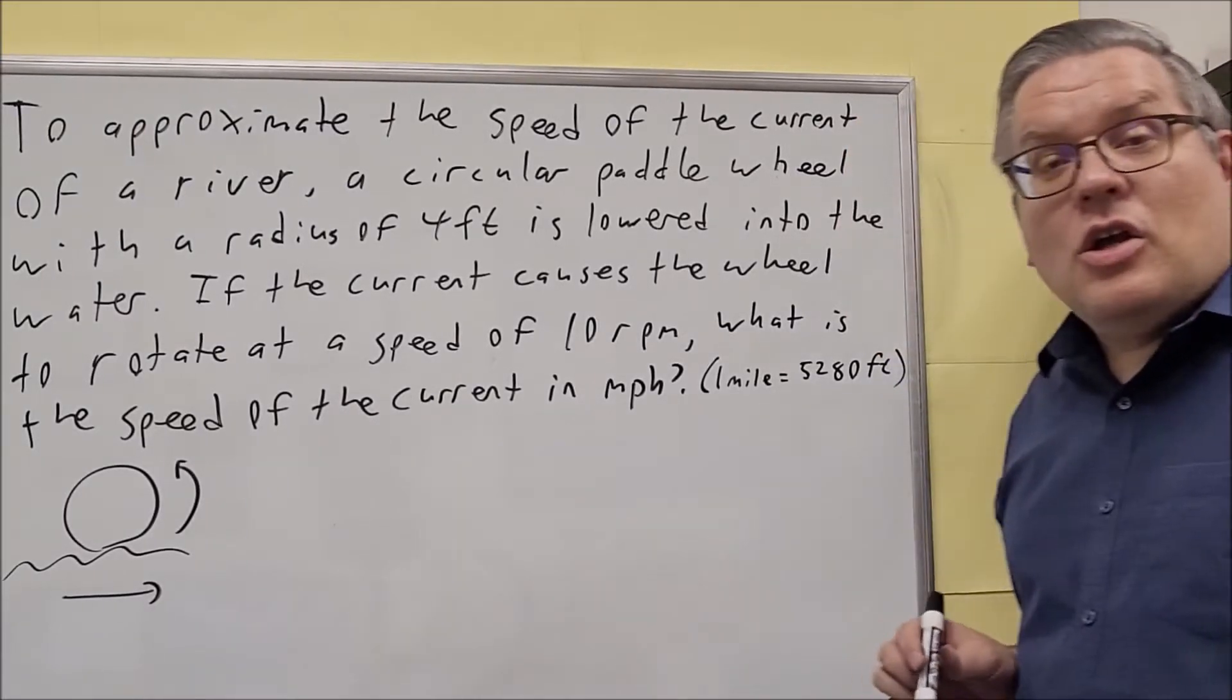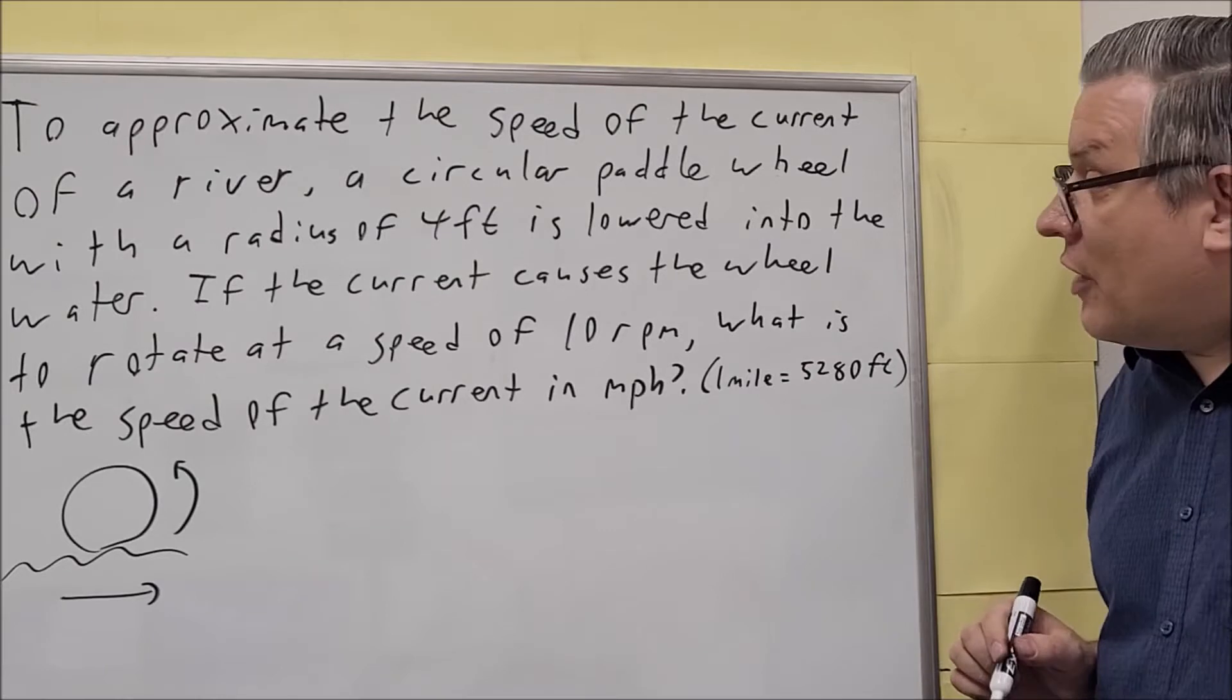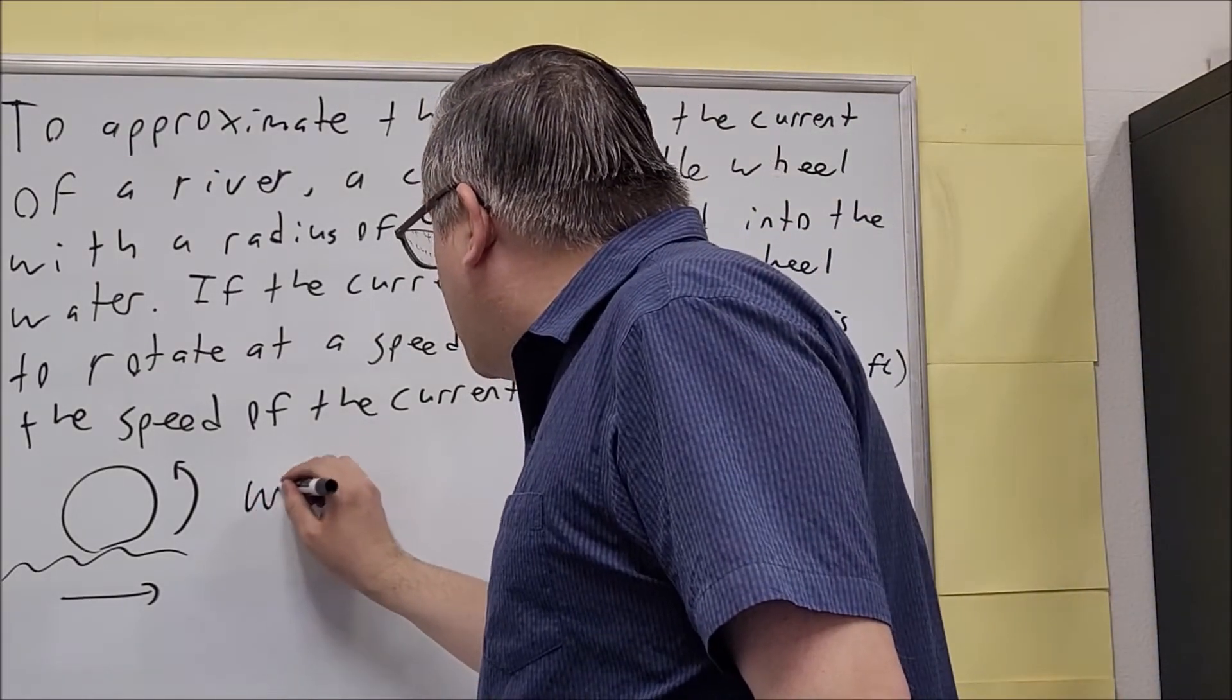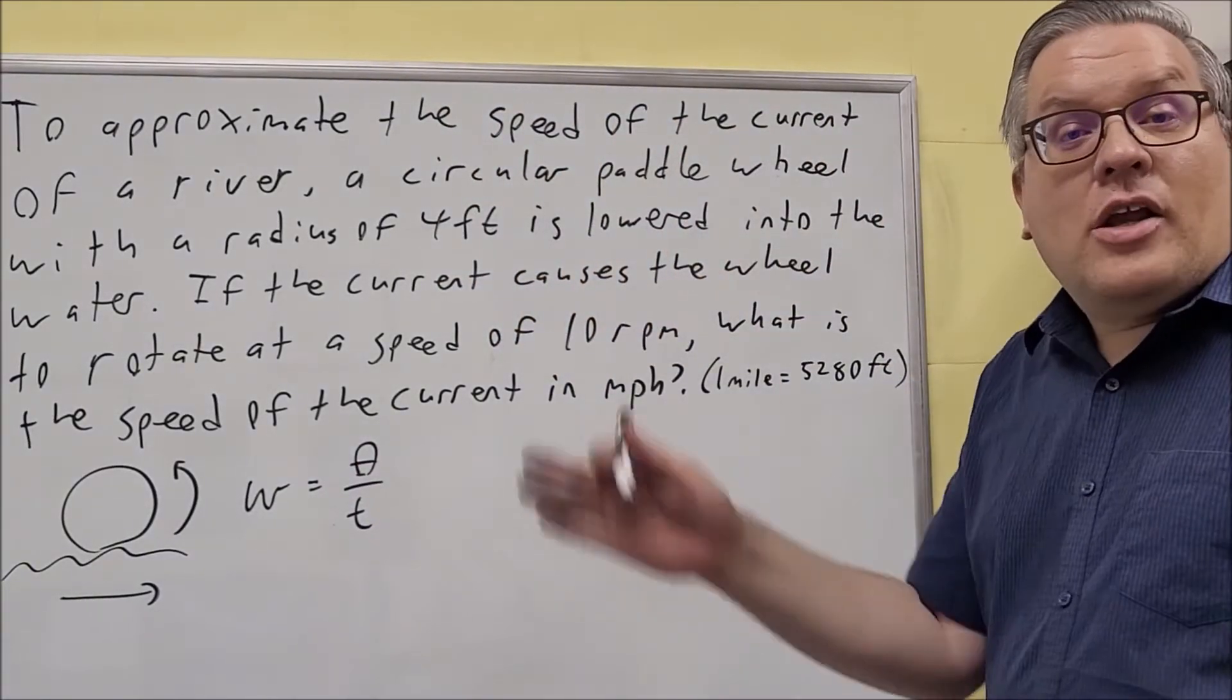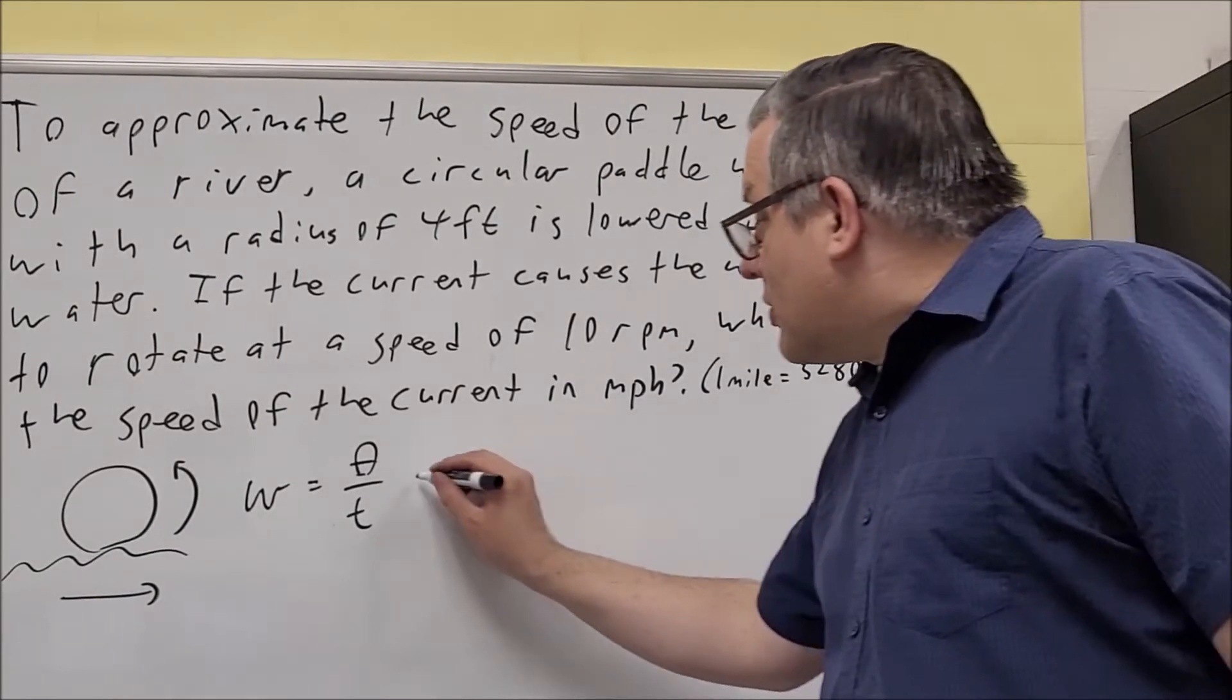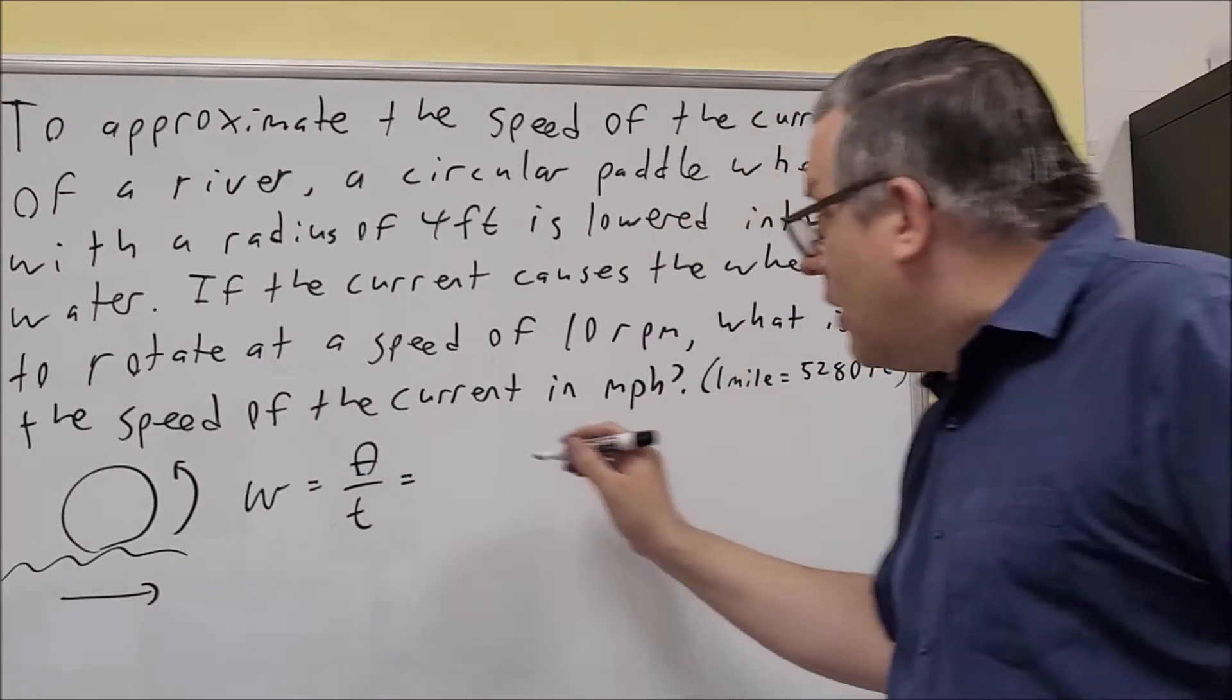Now in order to find linear speed we have to first find the angular speed. So let's do that first. Omega equals theta over T is the formula. It's however many angles you cover over a certain amount of time. Now for this they don't give us an angle but they do give us 10 RPMs. So let's start with that.